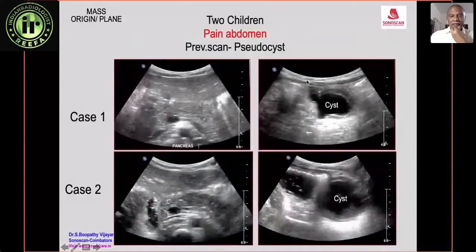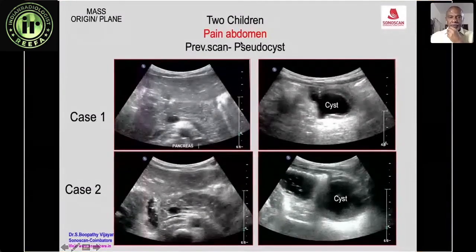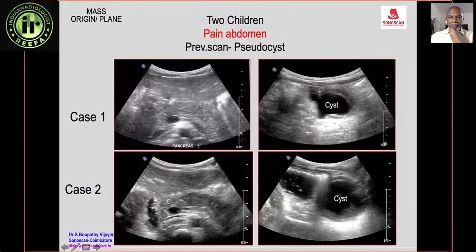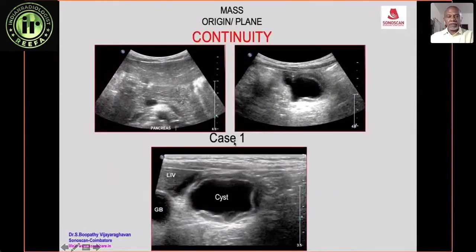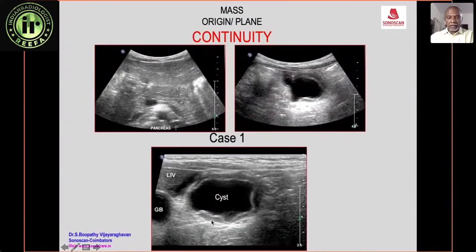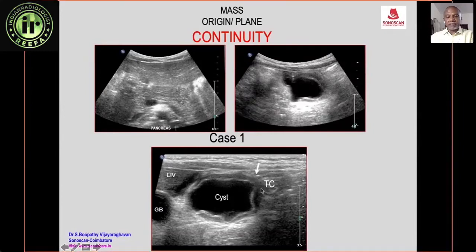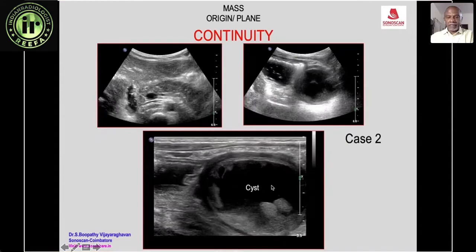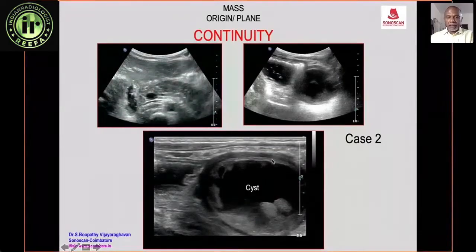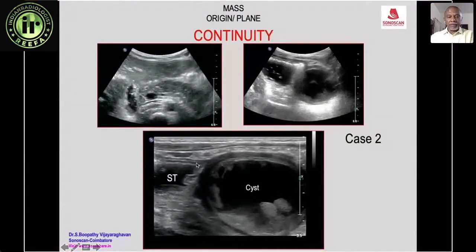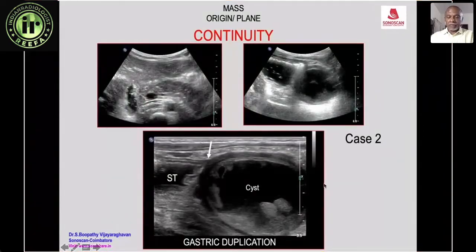To illustrate the continuity sign, two children presenting with pain abdomen are shown — both previously reported as pseudocyst. In Case 1, high-frequency imaging shows the liver, gallbladder, cyst, and gut signature in the cyst wall indicating a duplication cyst. The transverse colon wall and cyst wall are continuous, confirming a duplication cyst of the transverse colon. In Case 2, the cyst again shows gut signature, but here the stomach wall and cyst wall are continuous — confirming a gastric duplication cyst.